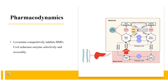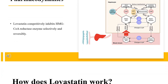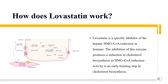High LDL-C, low HDL-C, and high TG concentrations in the plasma are associated with increased risk of atherosclerosis and cardiovascular disease. The total cholesterol to HDL-C ratio is a strong predictor of coronary artery disease, and high ratios are associated with higher risk. Increased levels of HDL-C are associated with lower cardiovascular risk. By decreasing LDL-C and TG and increasing HDL-C, Lovastatin reduces the risk of cardiovascular morbidity and mortality.